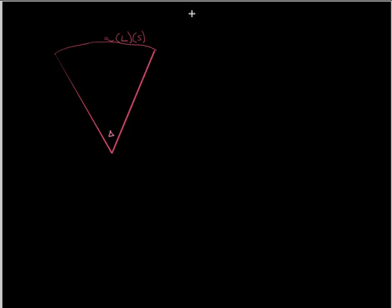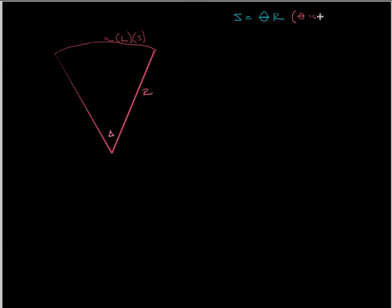The length is usually L. There's a generic formula for arc length subtended by a certain angle, and that is S is equal to theta times R, where S is the arc length, theta is the angle subtended by that arc, and R is your radius. Theta is in radians.